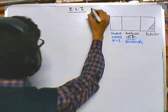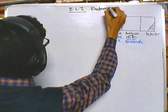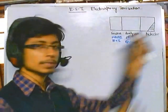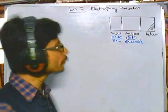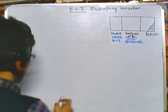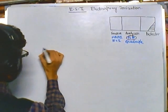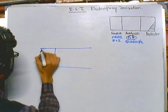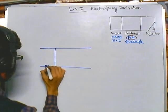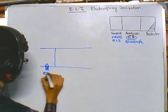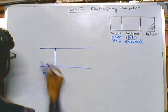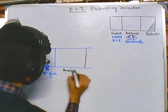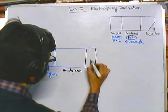ESI, or electrospray ionization. The mass spec instrument here is a basic three-chamber instrument — a slightly modified schematic. We have the source region, then the analyzer, and then the detector region where we have the detector.